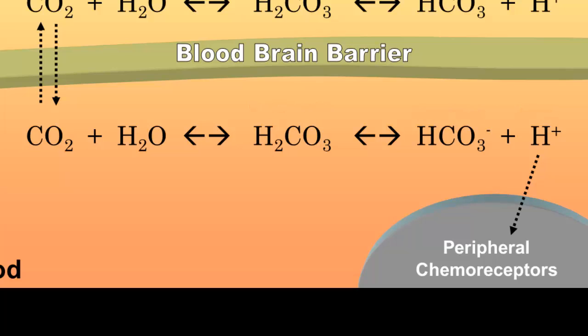The peripheral chemoreceptors are sensitive to the concentration of protons. They're located within the carotid bodies and aortic bodies, and so they are continuously monitoring blood pH levels and adjusting ventilation appropriately.